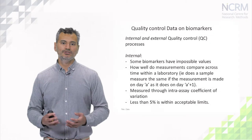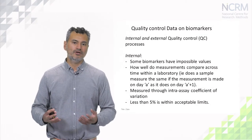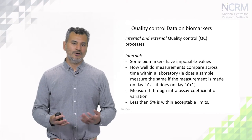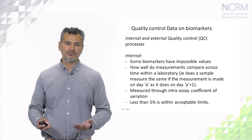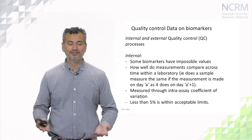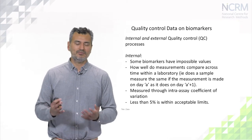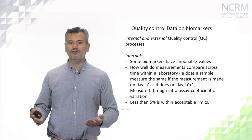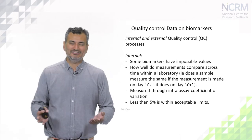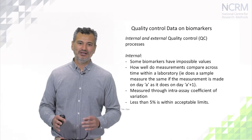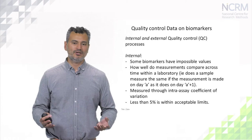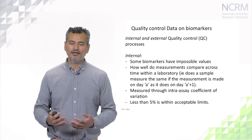I'd also like to talk about some of the quality control issues that researchers should be aware of when looking at biomarker data, which is largely down to the labs that process these blood-based biomarkers. These are divided into internal and external quality control processes. Some of the biomarkers have impossible values — for example, biomarkers like height and weight. If you have somebody in your data set that is 10 meters tall or 1,000 kilograms in weight, you can rule out that these are real values. So it's good to look at the distribution of your biomarkers to identify impossible values and treat them as outliers.